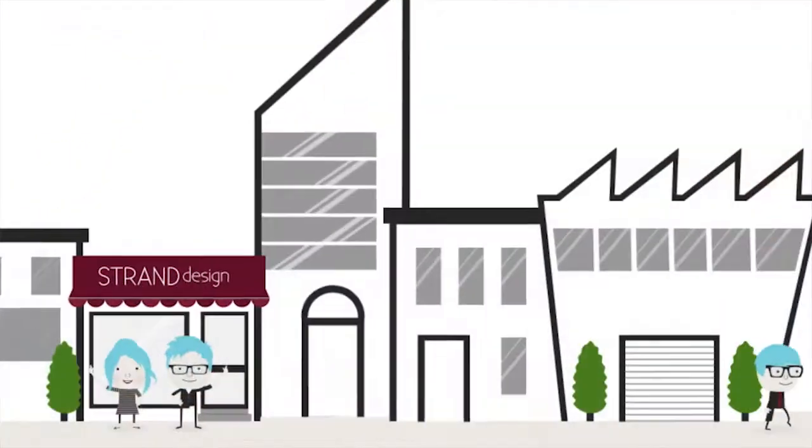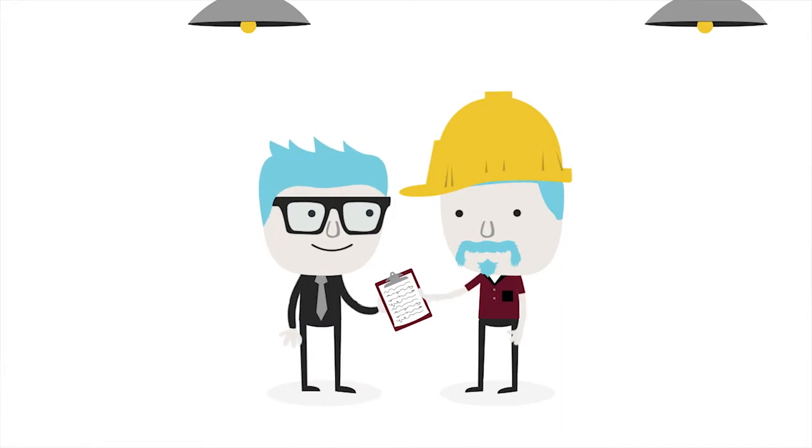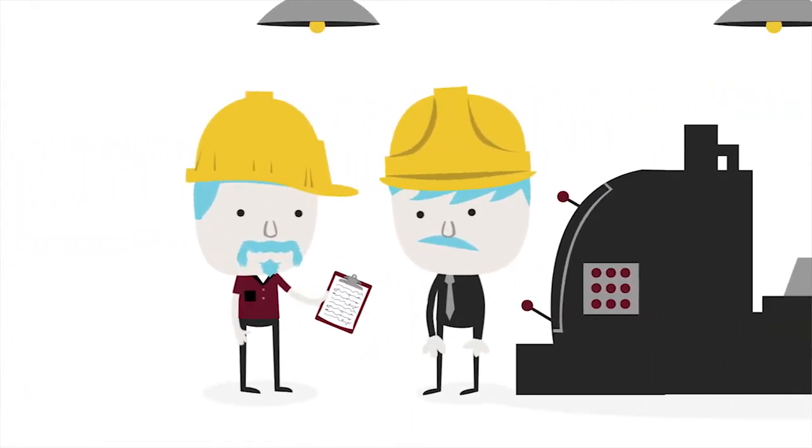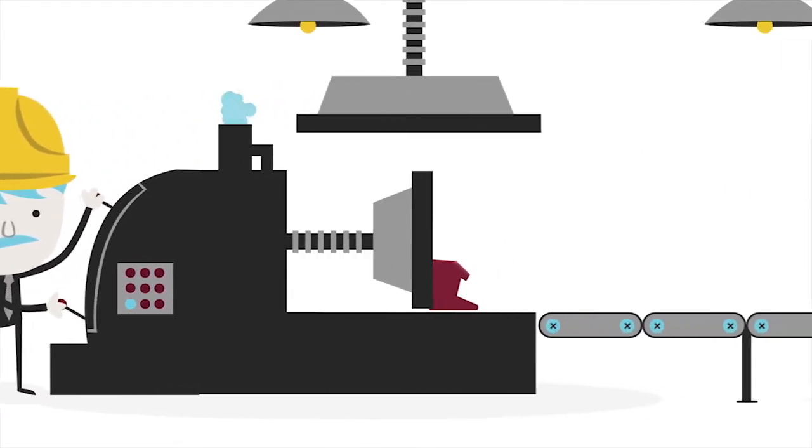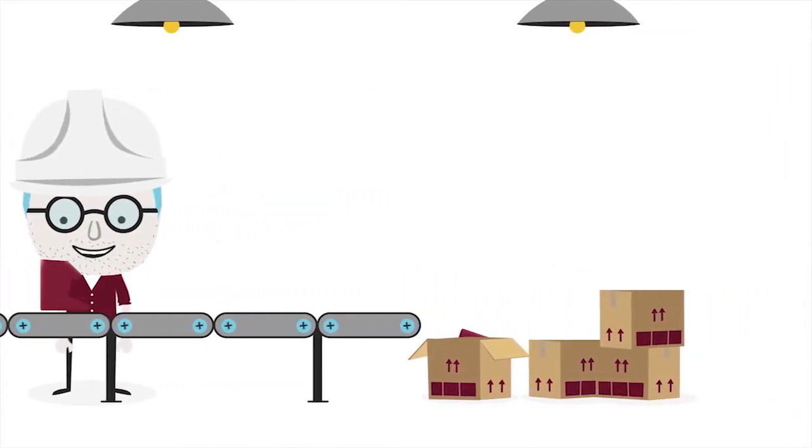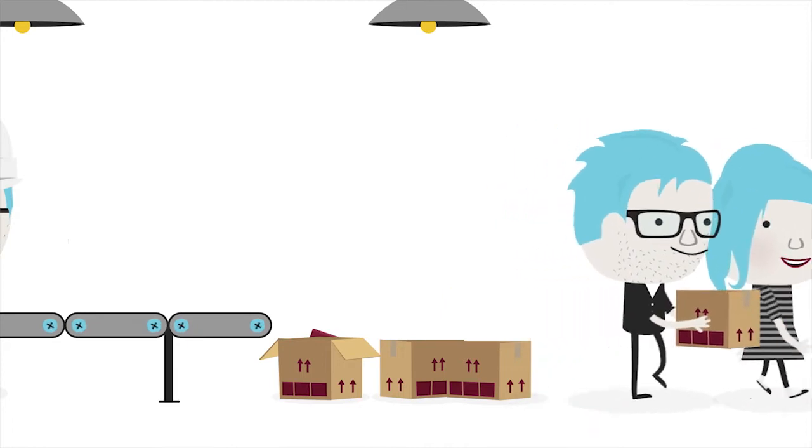We'll do a drawing, different views of the product with dimensions and specifications and notes. Internally in the factory, the salespeople or project managers will pass something off to a foreman. The foreman will get the job to the right person operating the right machine. A part will go through specific operations at specific stations, then get checked quality control, then get packed up, and then we'll go pick it up from the factory.